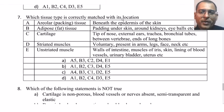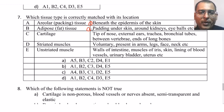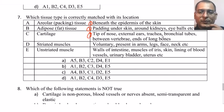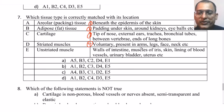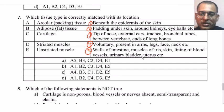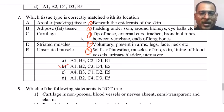Next question: which tissue type is correctly matched? Areolar or packing tissue — beneath the epidermis of the skin; adipose or fat tissue — padding under the skin, around kidneys, eyeballs, etc.; cartilage — tip of nose, external ears, trachea, bronchial tubes, between vertebrae, ends of long bones; striated muscles — voluntary, present in arms, legs, face, neck; unstriated muscles — walls of intestine, muscles of iris, skin, lining of blood vessels, urinary bladder, uterus. All are correctly matched.